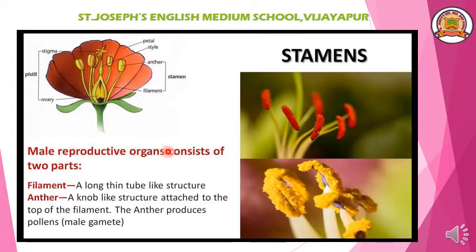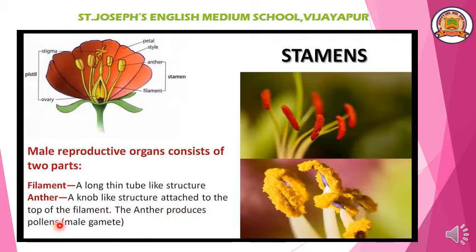The male reproductive organ consists of two parts: filament and anther. A long thin tube-like structure is called the filament. Anther is a knob-like structure attached to the top of the filament. Anther produces pollen — the male gamete. You can see here the knob-like structure attached to the filament is the anther. It produces a very velvety powder-like structure called pollen grains, which are called the male gamete.